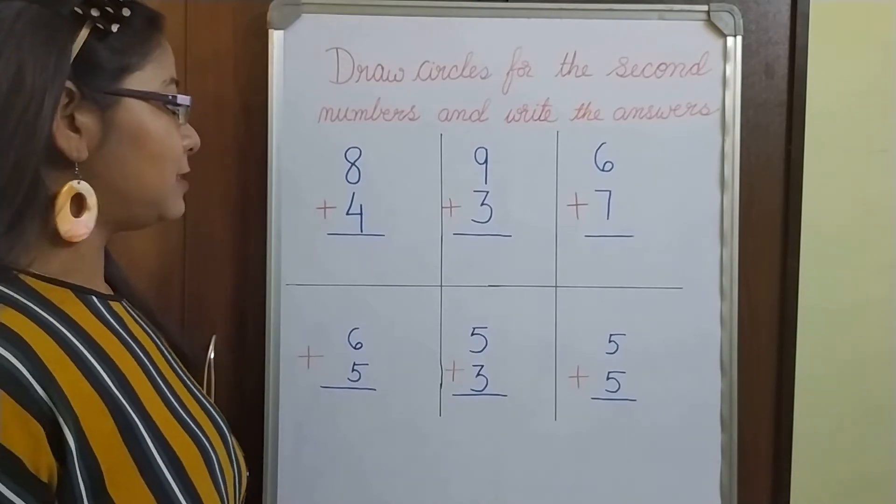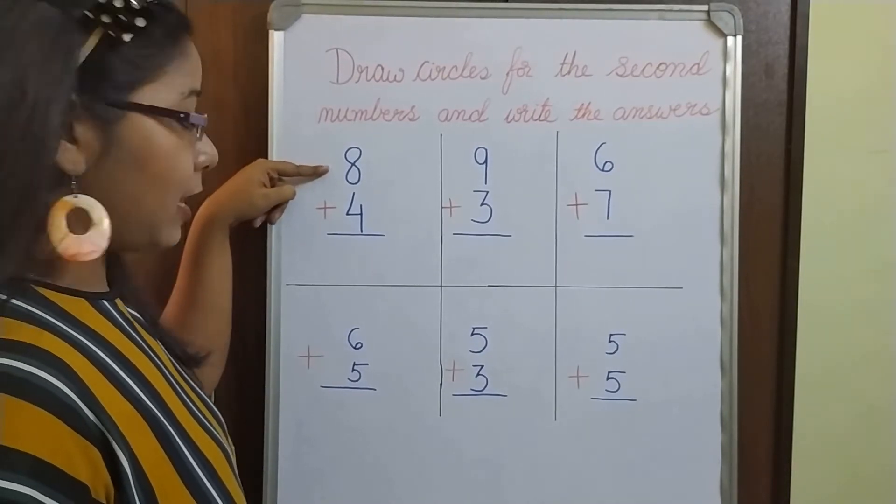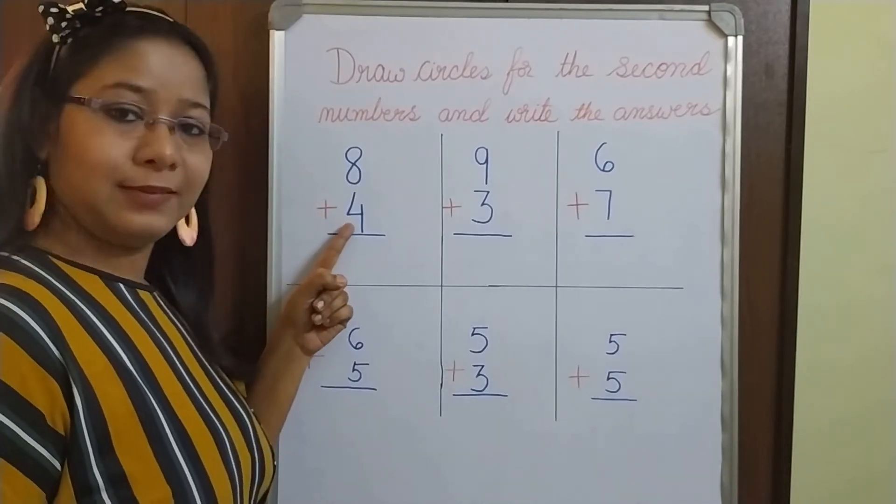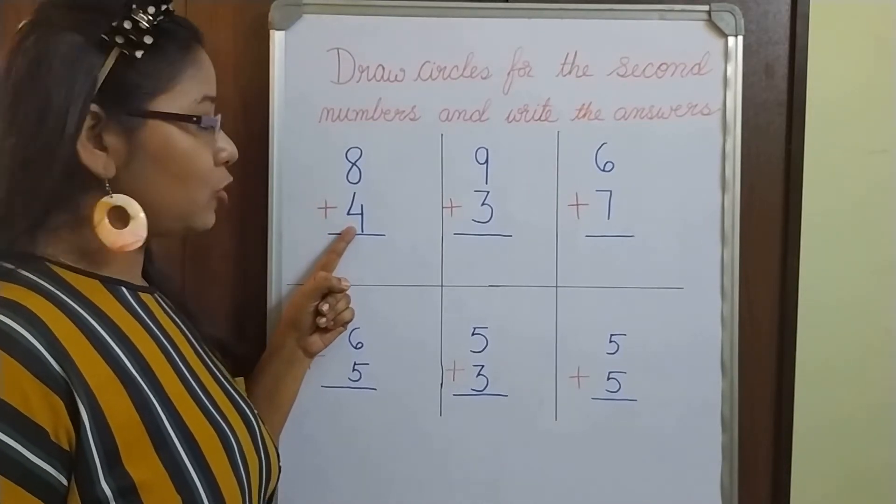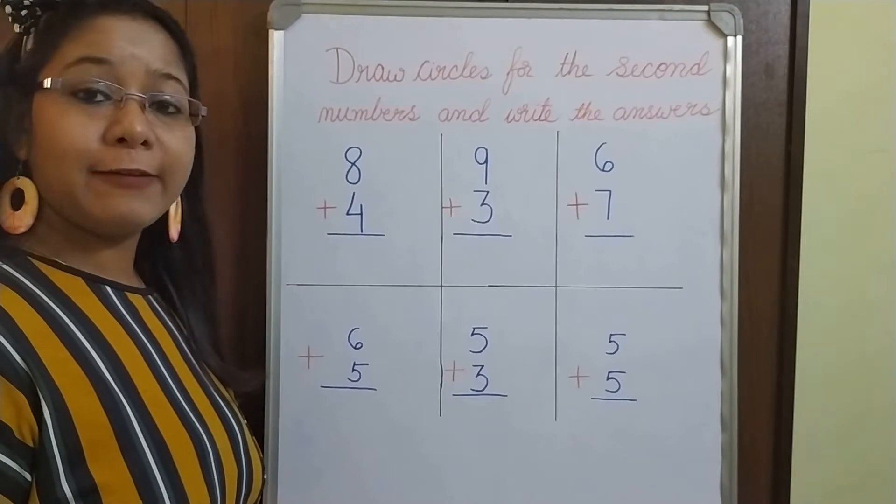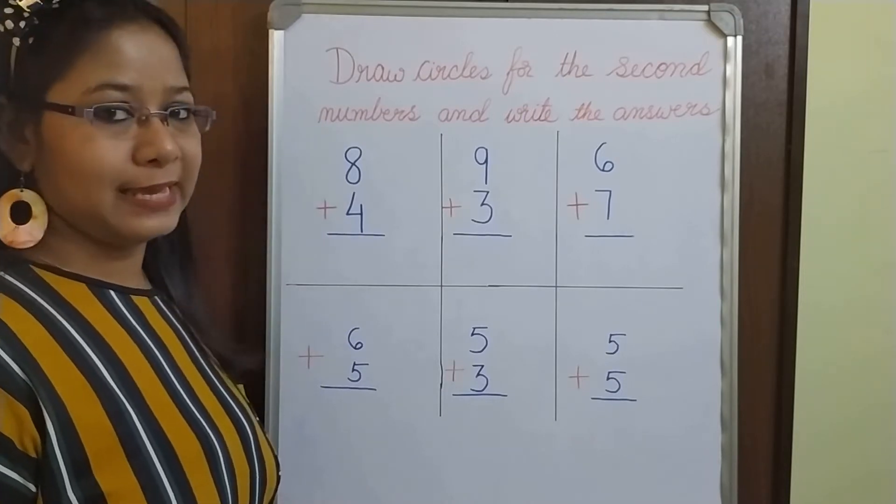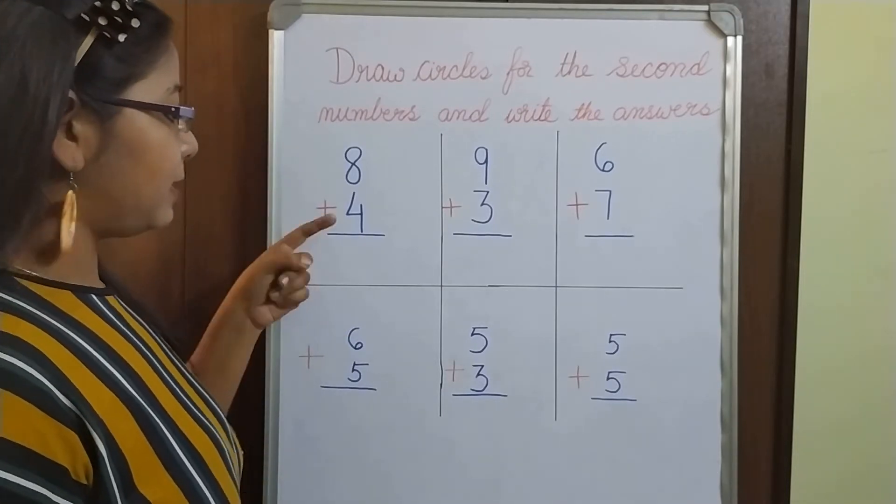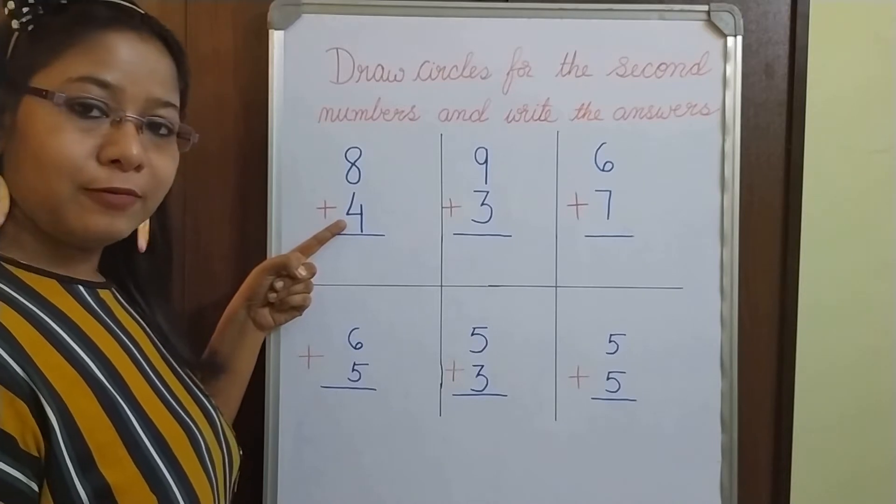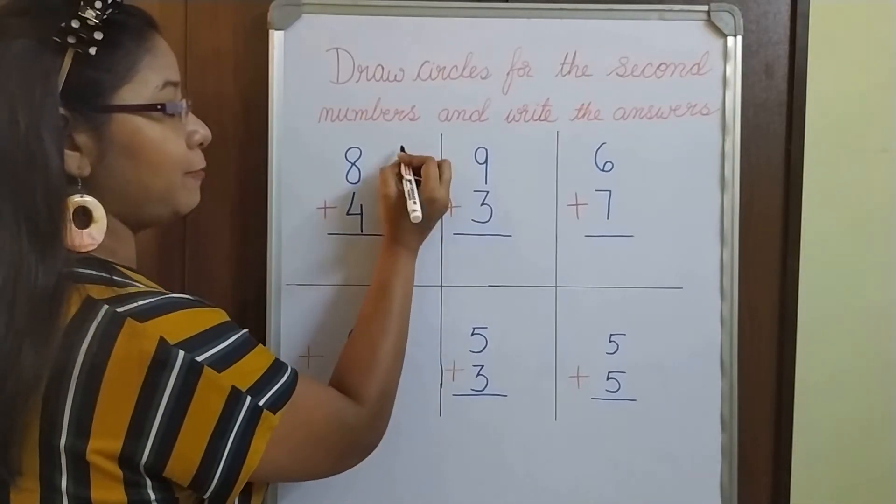Our first number is 8. And our second number is? Yes, 4. So what we have to do? We have to draw a circle for the second number. Here the second number is 4. So let me draw 4 circles.